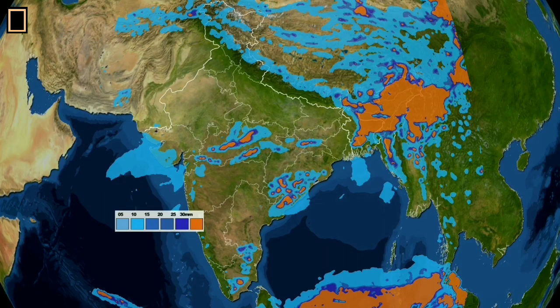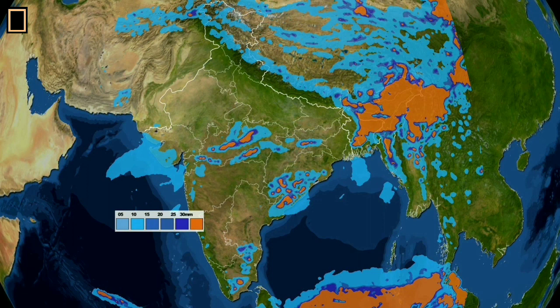The headquarters of the meteorological department of West Bengal is at Alipur, and the headquarter of Indian meteorological department is Mausam Bhavan, Delhi.